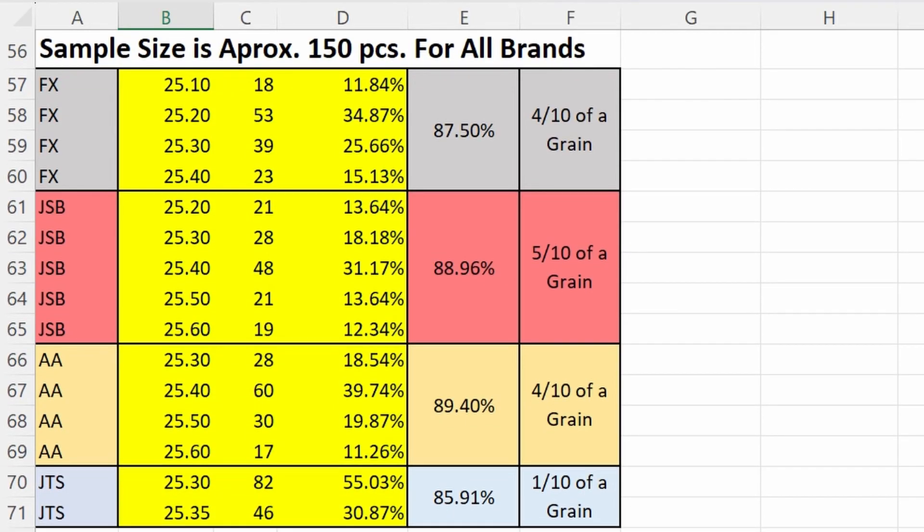To see, it's all the same data, I just broke it up a different way. It takes four-tenths of a grain window to capture 87.5% of the pellets for the FX. The JSBs, five-tenths of a grain window captures 89%. Air Arms, four-tenths of a grain window captures 89%. And JTS, one-tenth of a grain window captures 85.91%.